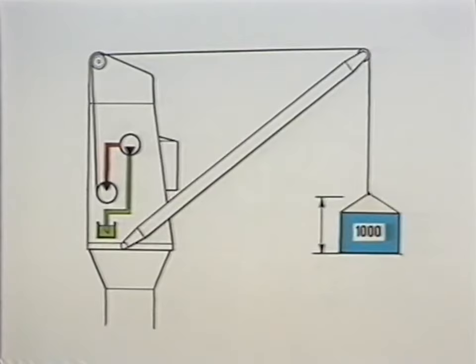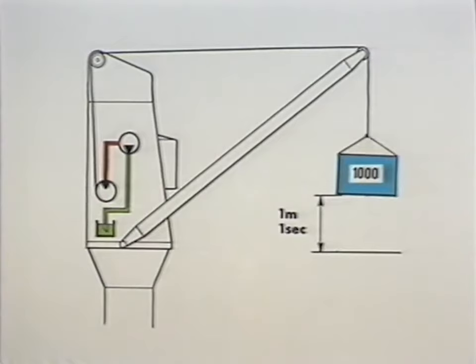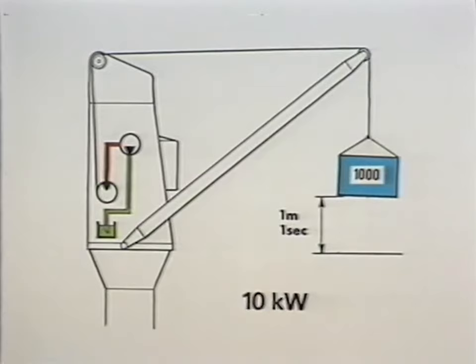If this deck crane is to successfully hoist this crate one metre within one second, then it needs to generate a power capacity or work capability of 10 kilowatt.